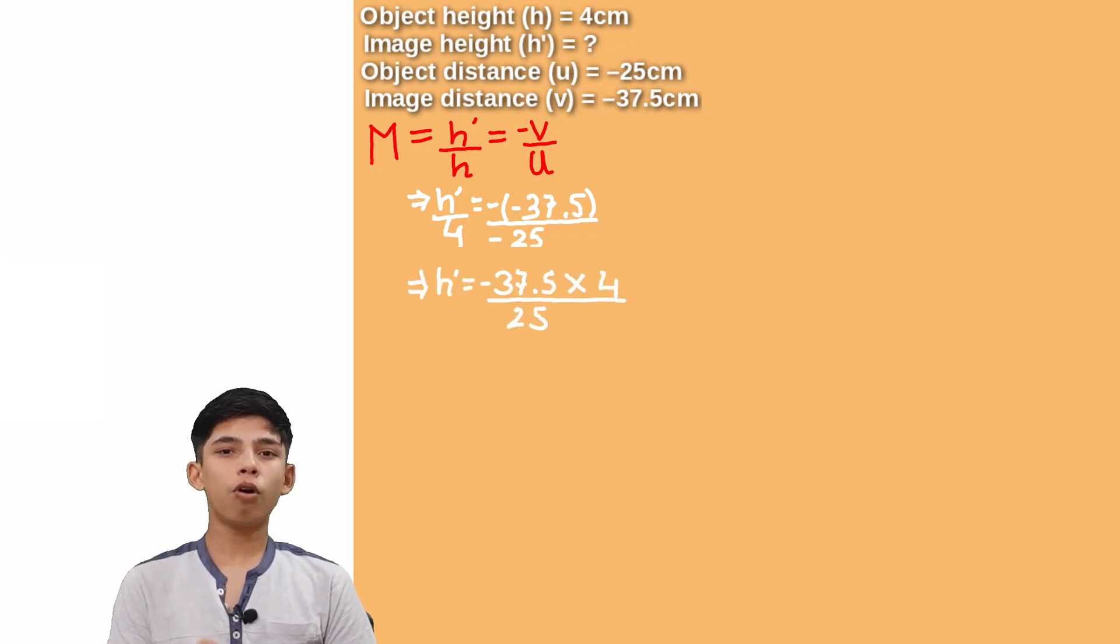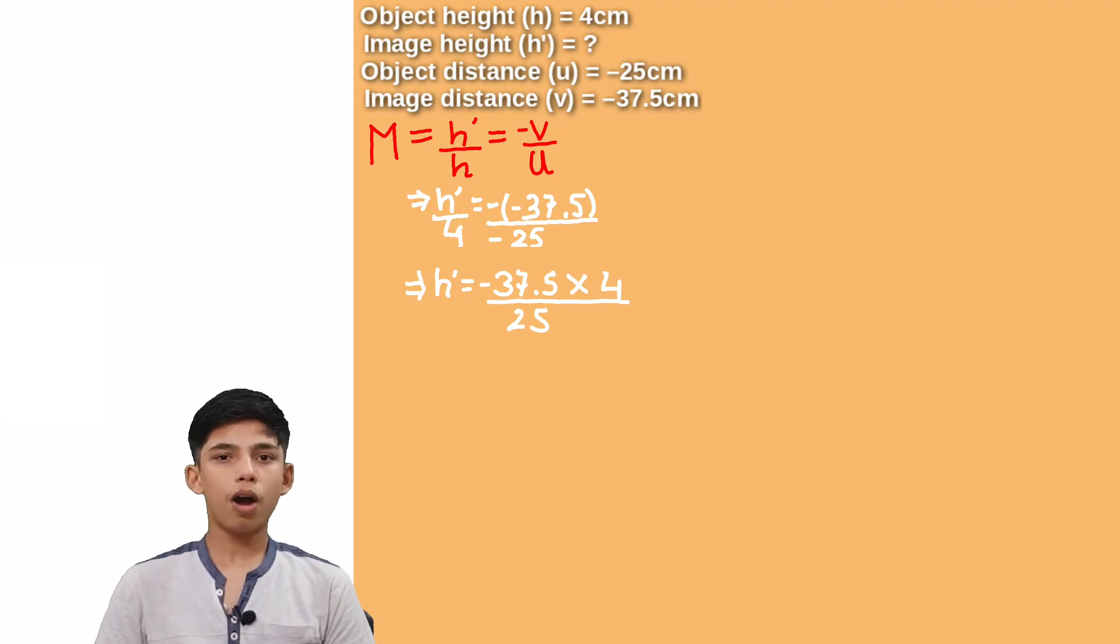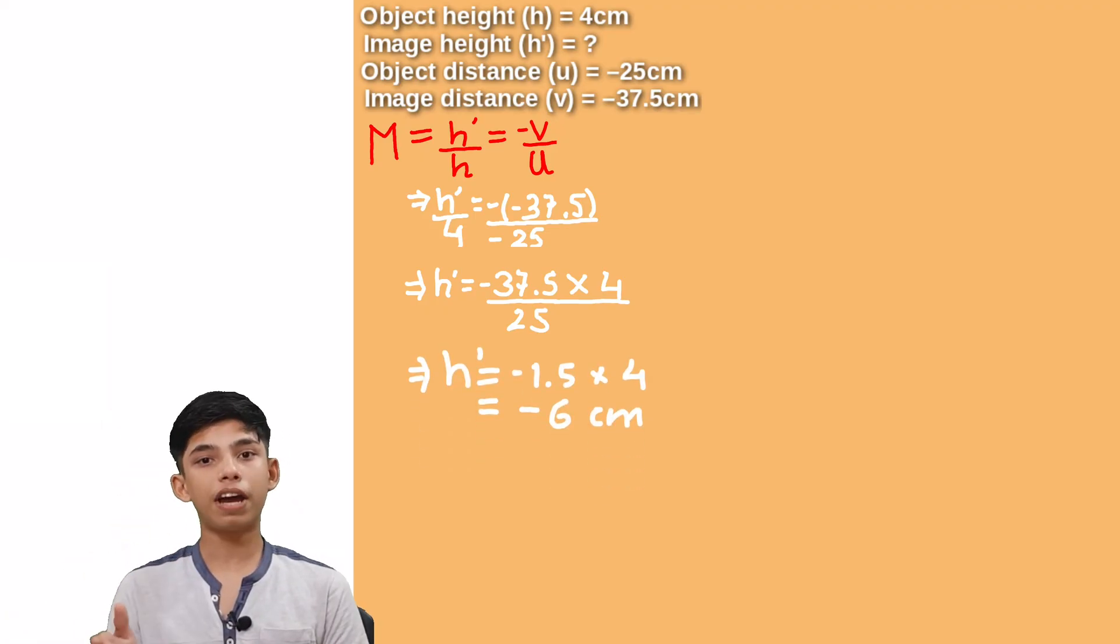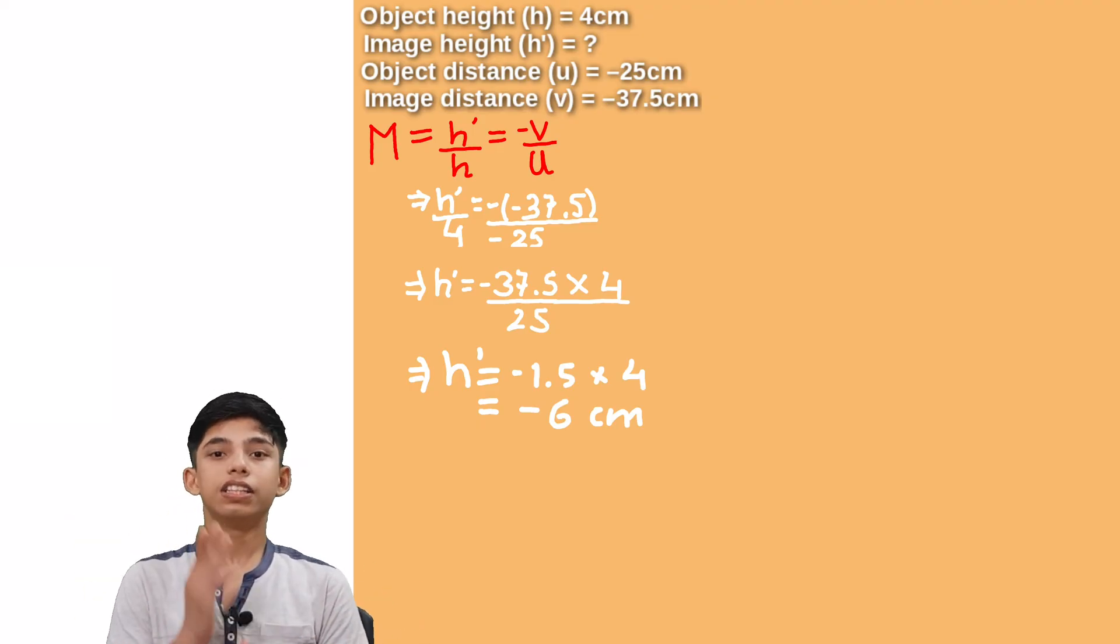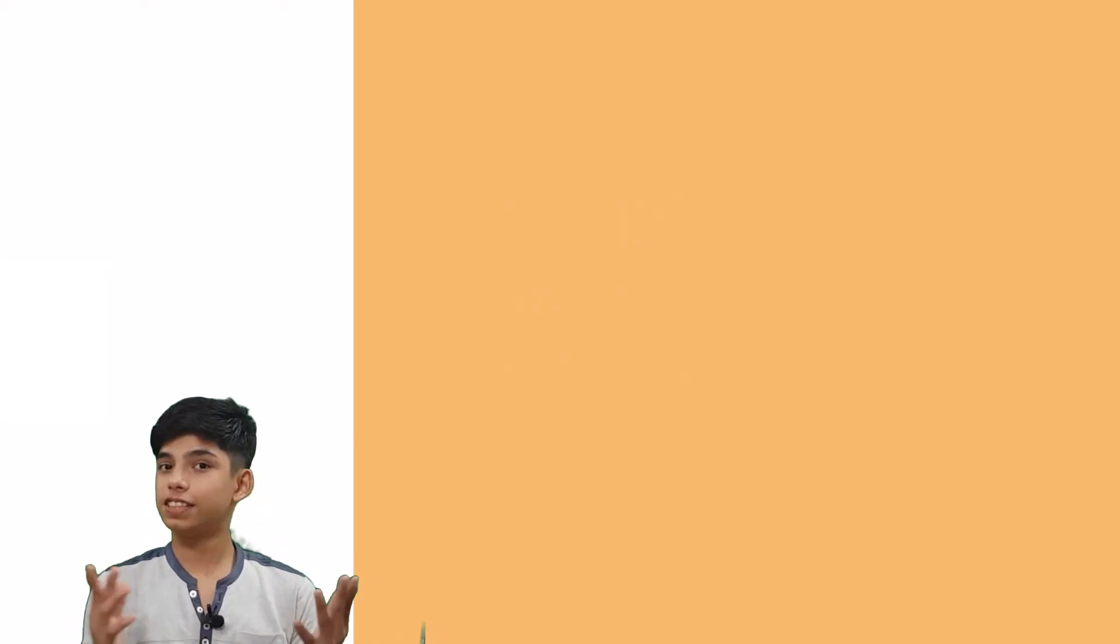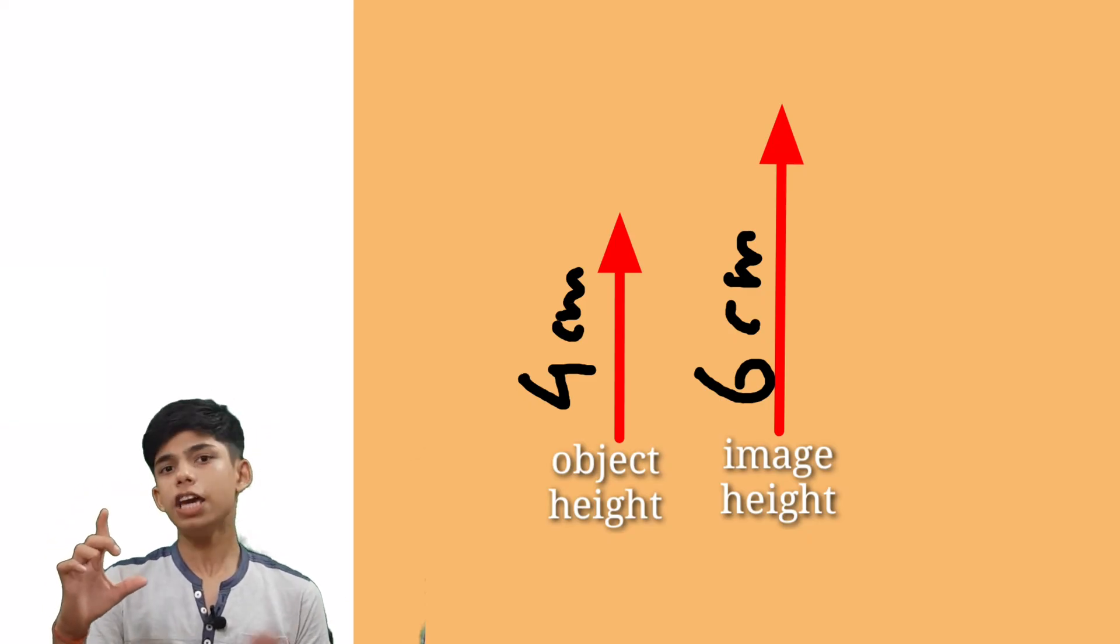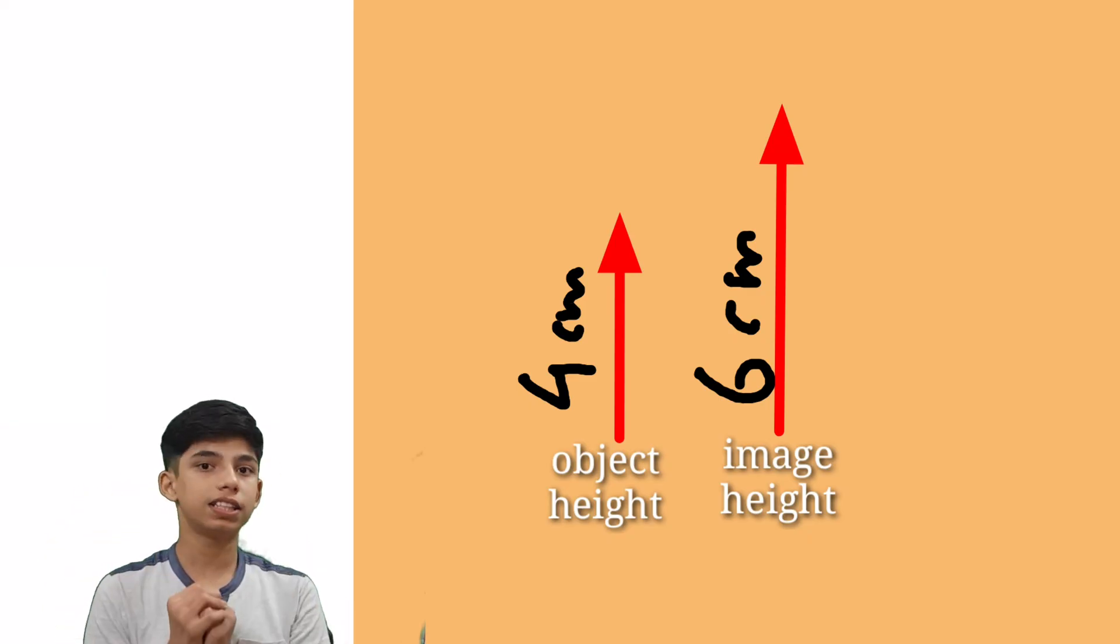Now let's take 4 on the other side. It will get multiplied and now we have to just calculate it. We have minus 1.5 into 4 and this gonna give us minus 6 centimeters. What does this mean? We have object height as 4 centimeters and image height as minus 6 centimeters.